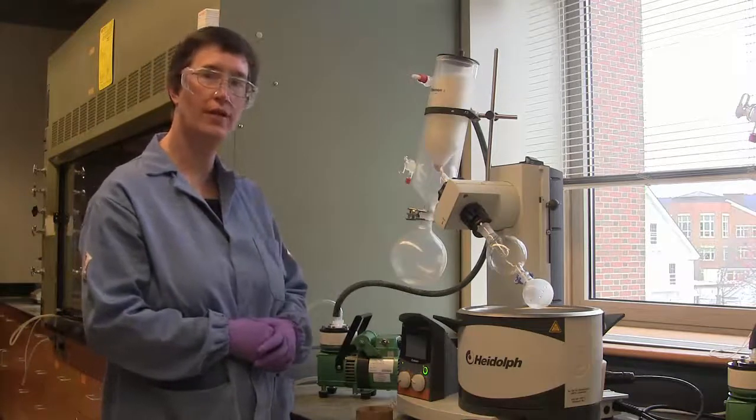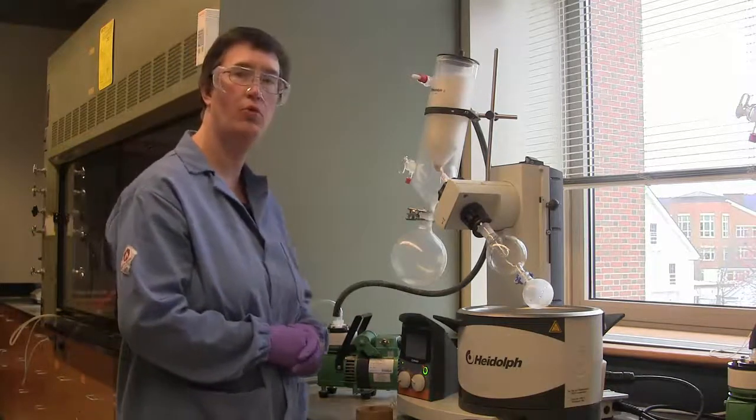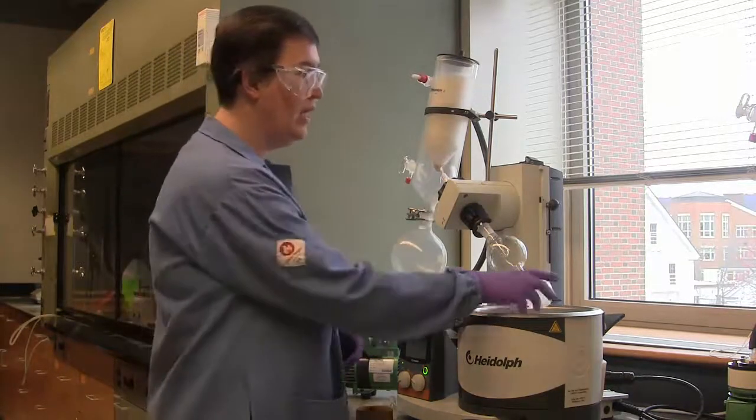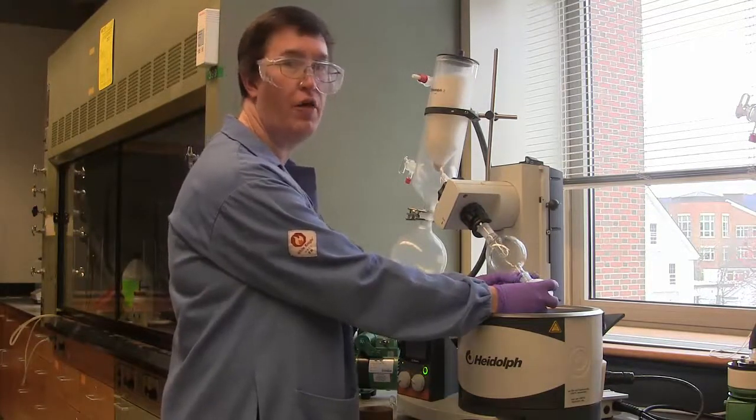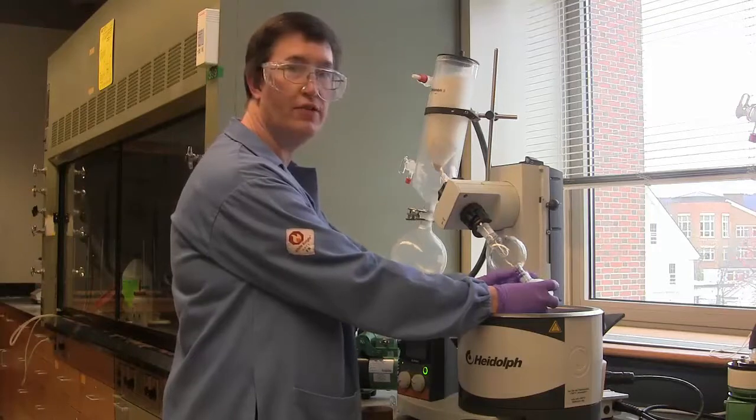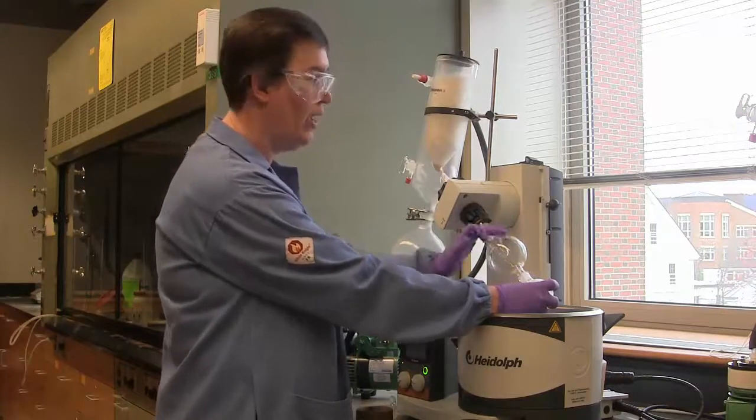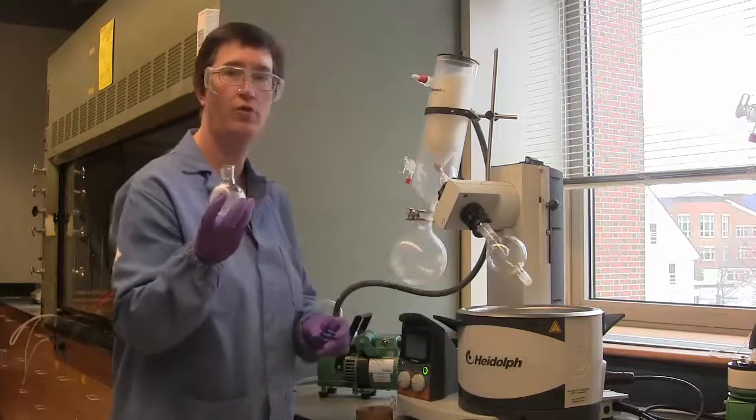Once the pressure has equilibrated to atmospheric pressure, I can then remove the round bottom flask. I simply hold the flask with one hand, and I pull the Keck clip off with the other. It's best to grab both sides of the Keck clip and pull away, and then remove the round bottom flask.